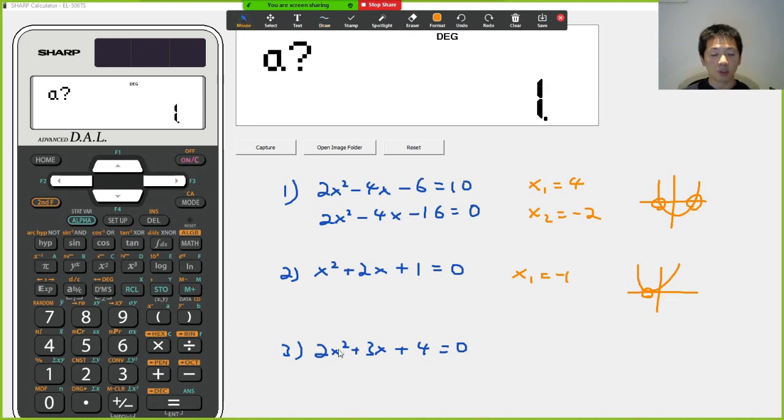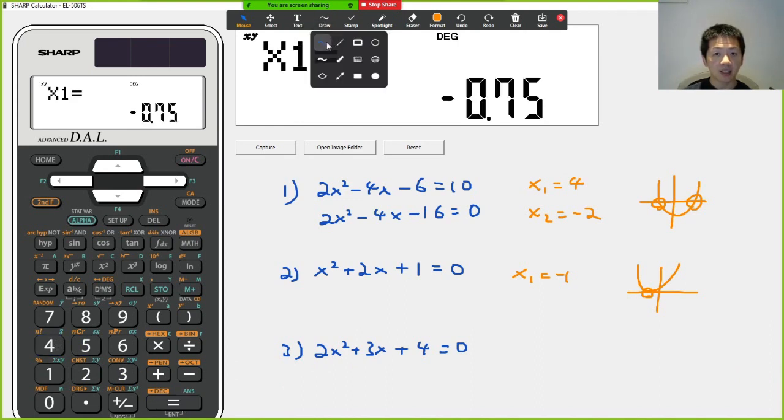Now, how about the next one? Question number 3. If I enter a equals to 2, 3 equals to b, and 4 is my c, I get something different. I see that I have an xy at the corner here. What does it mean? xy means that the answer is imaginary. It's something that we don't learn in high school.